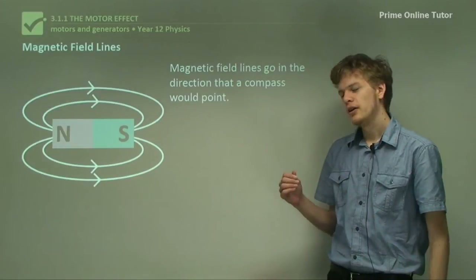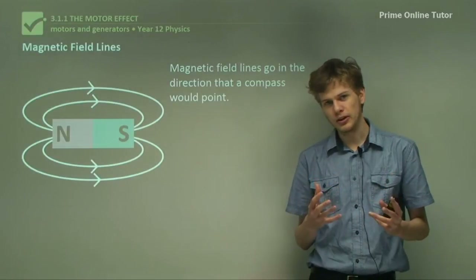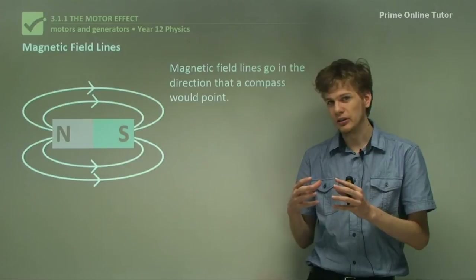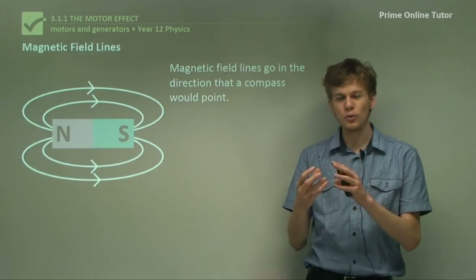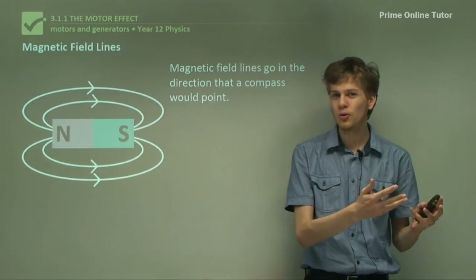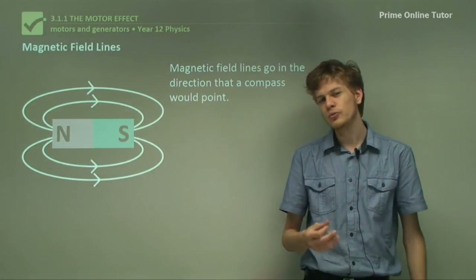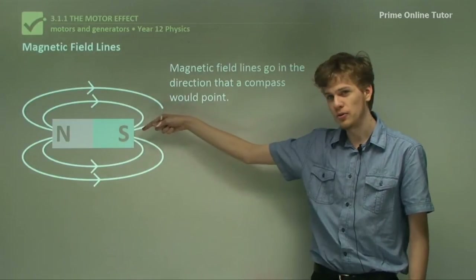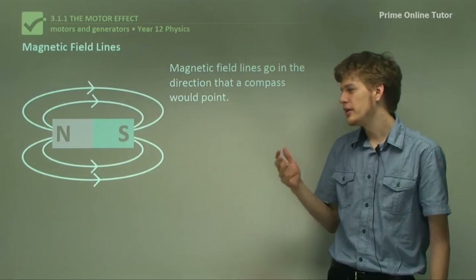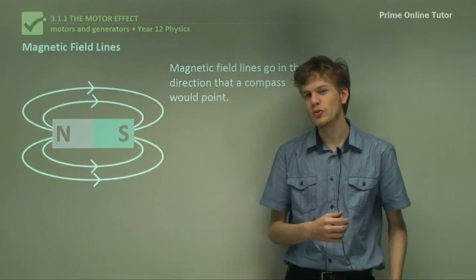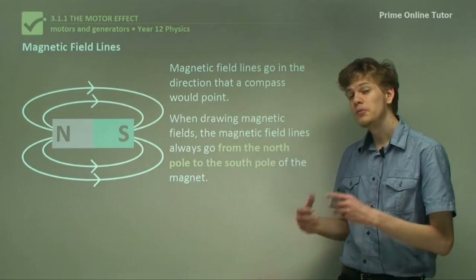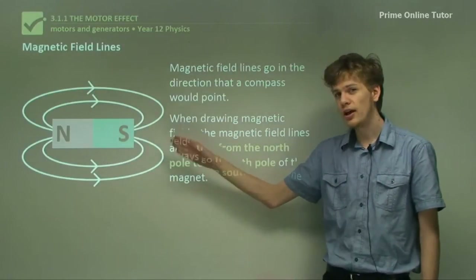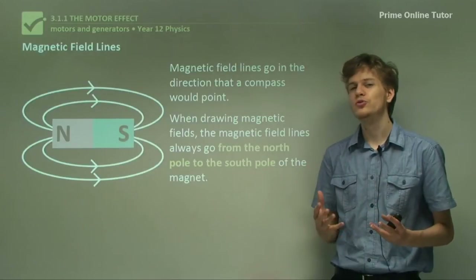We say that magnetic field lines point in the same direction that a compass would point. The north pole of a compass needle is magnetized north, so it will be attracted to south poles of magnets. So if you bring a compass very close to the south pole of a magnet, the compass will point toward the south pole. And if you bring it close to the north pole, it will point away from the north pole. So when we draw magnetic field lines, they go from the north pole of the magnet to the south pole of the magnet.